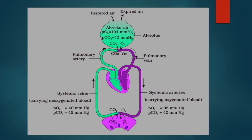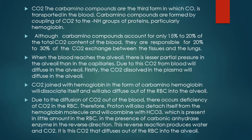90% of carbon dioxide moves out in the lungs in the form of bicarbonate ions, and this is the second route of carbon dioxide transport. So up till now we have discussed two routes: one is the dissolution of carbon dioxide within the blood plasma, which accounts for only 5% of carbon dioxide transport; the other route is transport in the form of bicarbonate ions, which accounts for 90%. The third form in which carbon dioxide is transported is as carbamino compounds. These are formed by coupling of carbon dioxide to the amino group of proteins, particularly hemoglobin. Although carbamino compounds account for only 15–20% of total carbon dioxide content of the blood, they are responsible for 20–30% of carbon dioxide exchange between the tissues and the lungs.